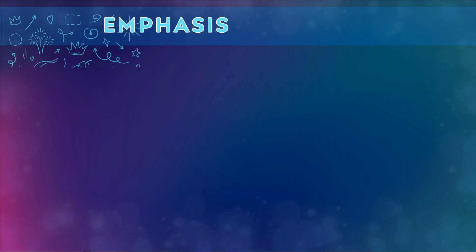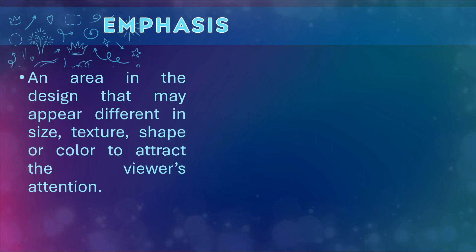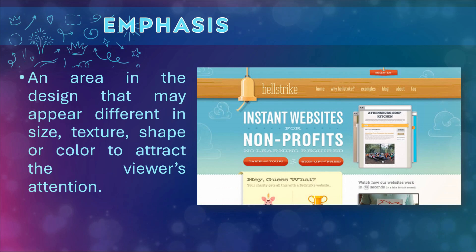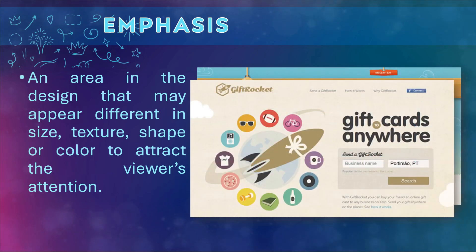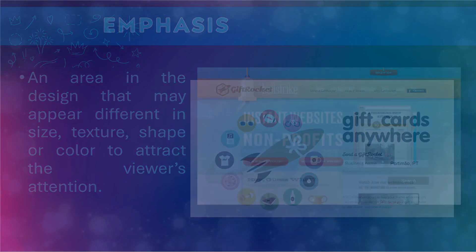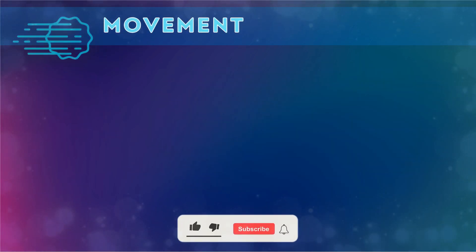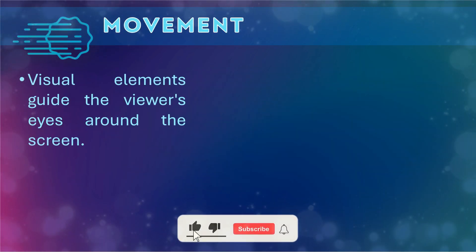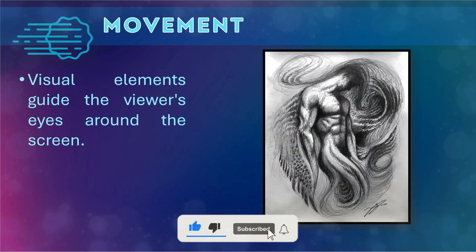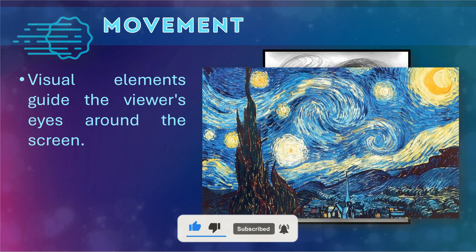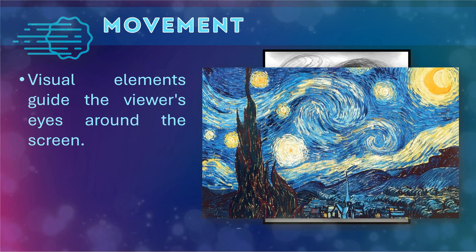Emphasis is an area in the design that may appear different in size, texture, shape, or color to attract the viewer's attention. Movement — these are images, pictures, or visual elements that guide the viewer's eye around the screen.